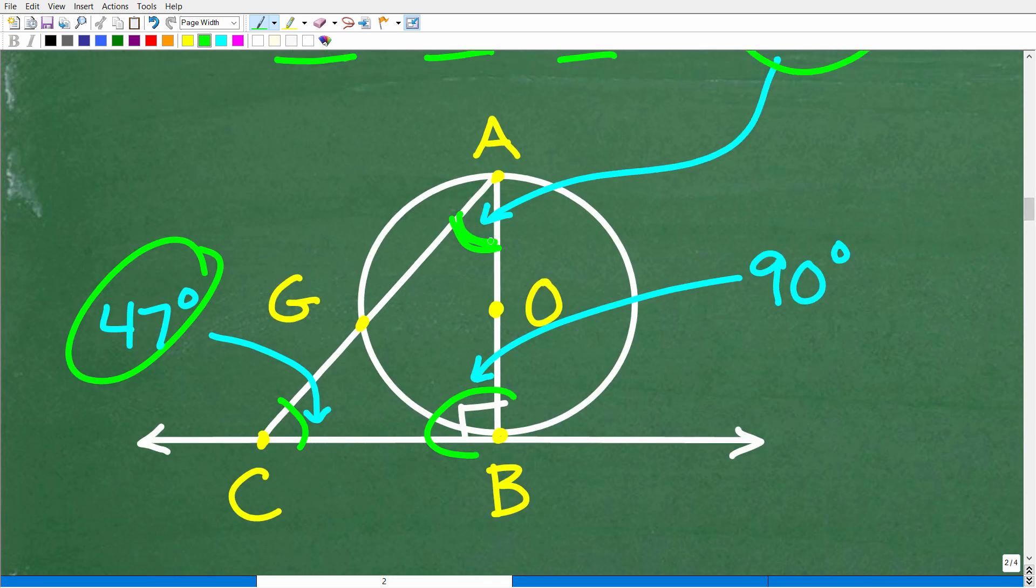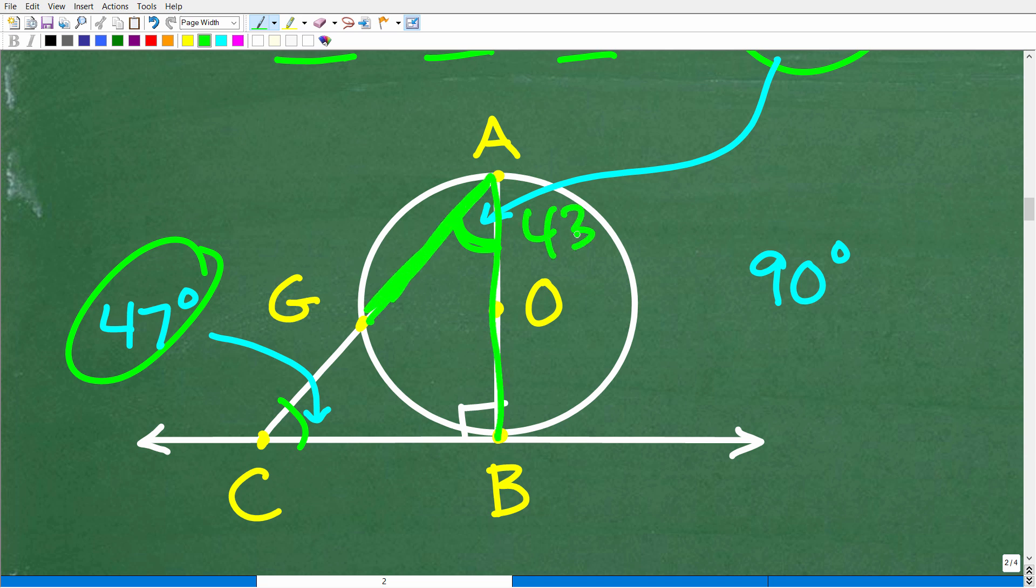So this angle right here is 43 degrees. And really, that is the key to solving this problem. Because effectively, we can just look at this problem, but don't get distracted with this triangle. We can just look at this angle A being 43 degrees and just focus in on the respective arc being formed by this inscribed angle.